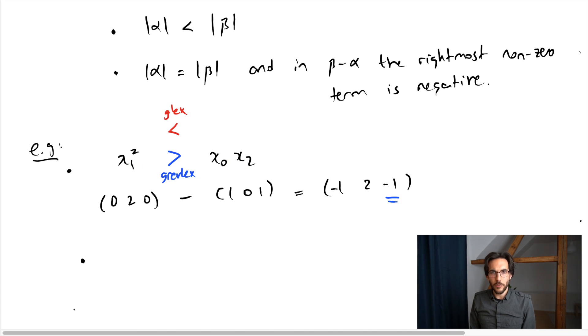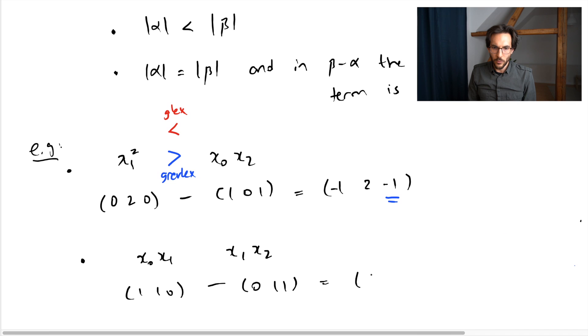This graded reverse lexicographic ordering is not just the inverse of the graded lexicographic ordering when the degrees match. Here's another example where both of them agree. So for these monomials, the exponent vectors are (1, 1, 0). This one has (0, 1, 1). And the difference is (1, 0, -1). So then the GREVLEX ordering tells me that this comparison is true. But also, that's because here this is -1. But then we look at the first term and see that it's positive, so that the GLEX ordering, or also the lexicographic ordering, tells me the same thing. For another reason.